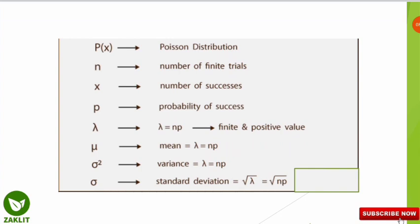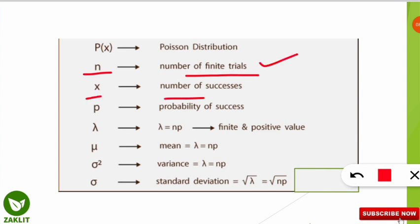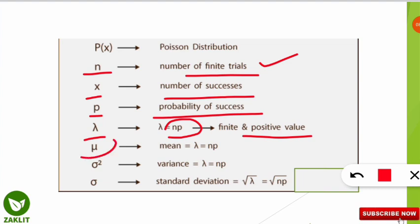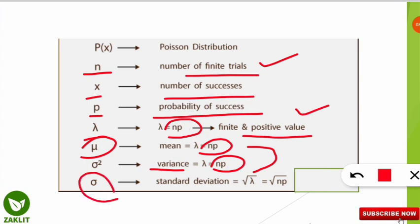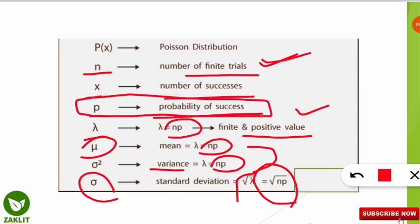In Poisson distribution: n denotes the number of finite trials, x is the number of successes, p is the probability of success, lambda (λ) = n × p (finite and positive), mean (μ) = np, and variance = np. Note that mean and variance are both equal. Standard deviation = √λ = √(mean) = √(variance) = √(np). These definitions are important to remember.